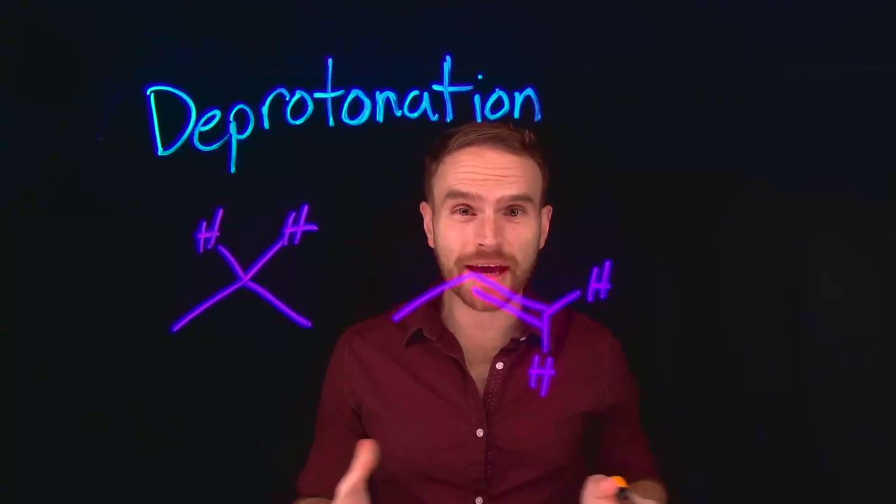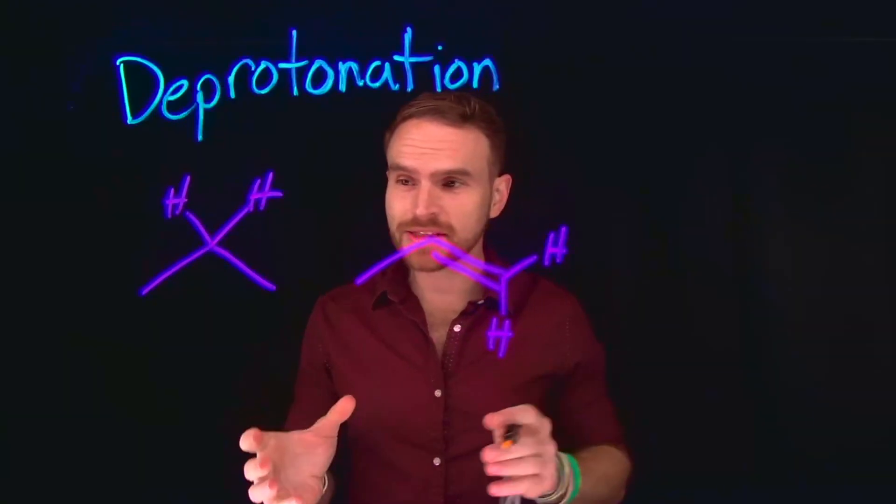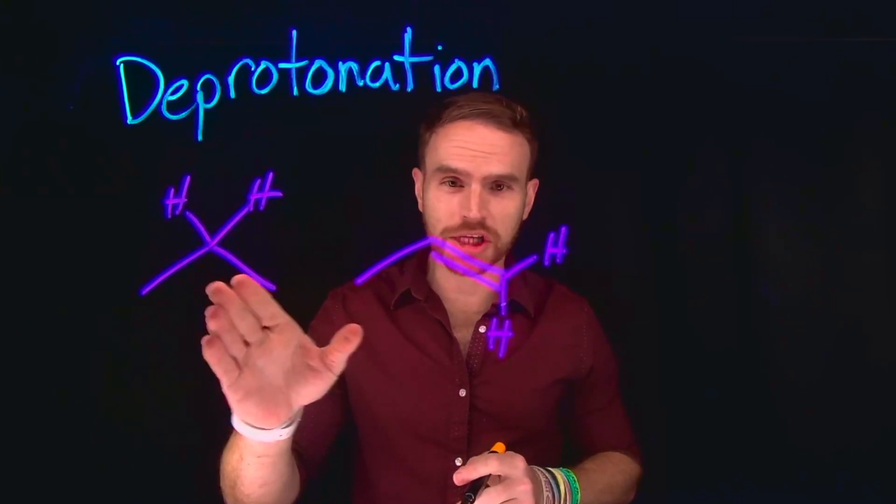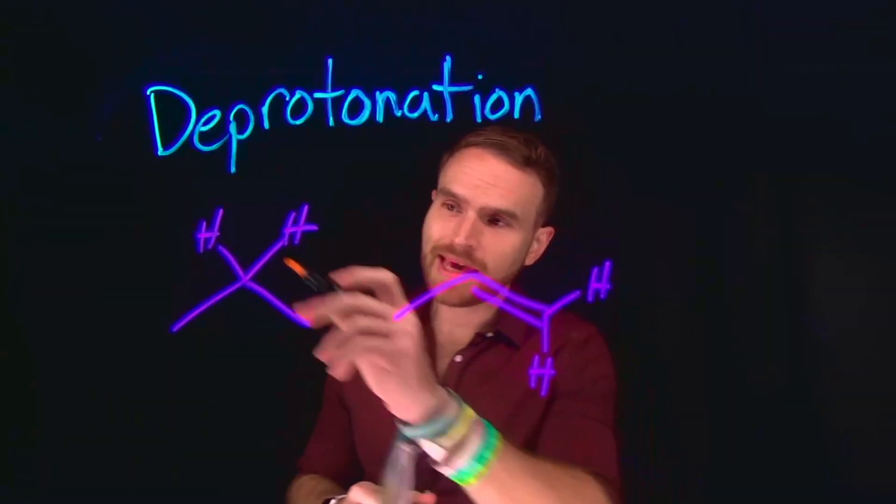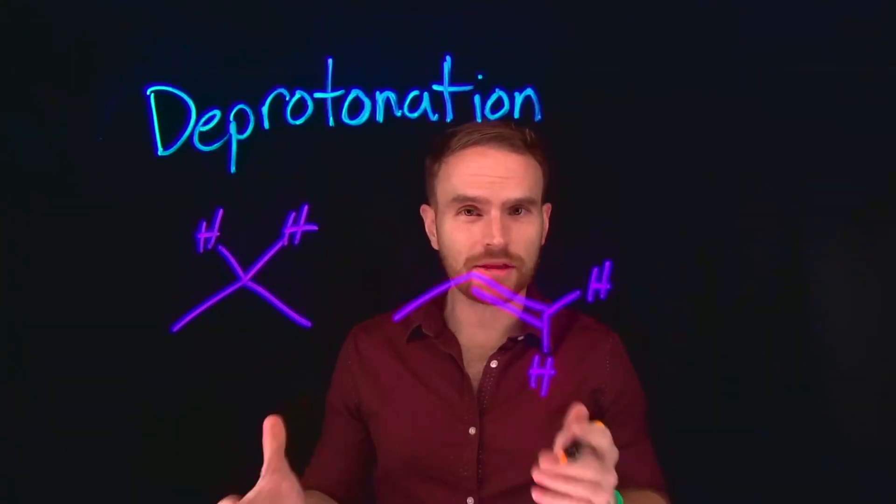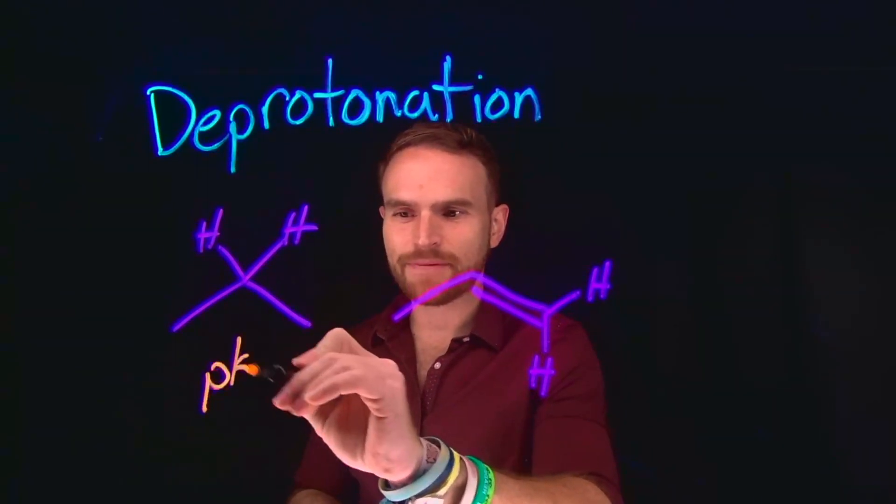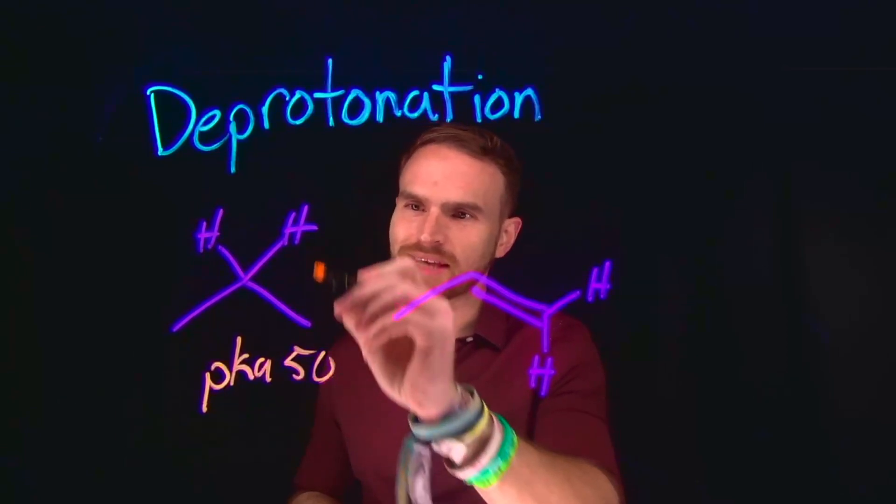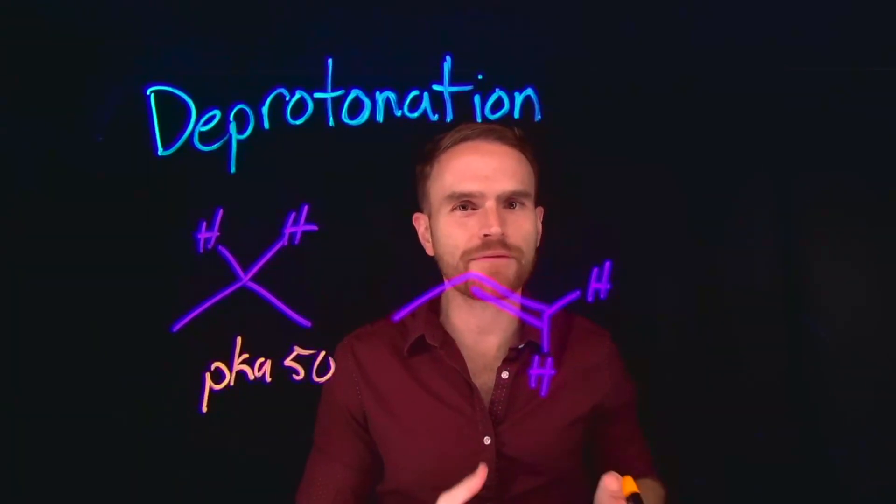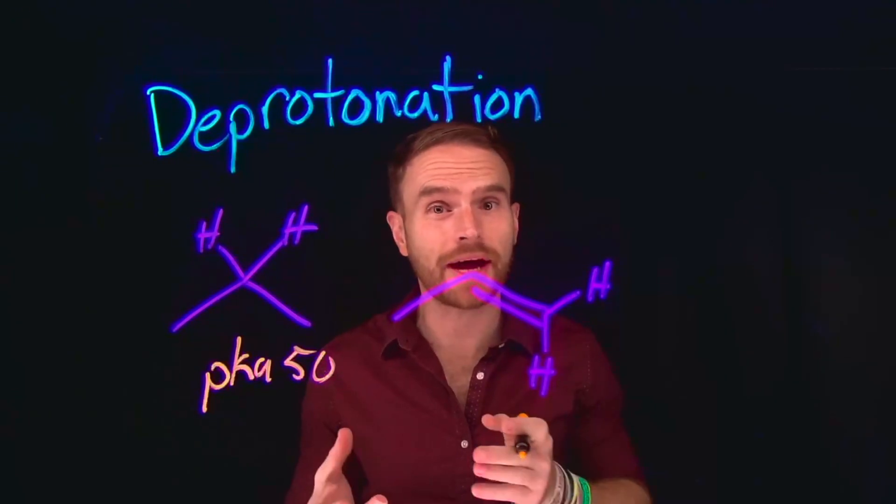The first step in alkyne alkylation is actually the deprotonation step. Let's consider for a moment a regular alkyl chain versus an alkene. The pKa of these hydrogens located at this carbon position is around 50, which means that these hydrogens are not very acidic and therefore not very likely to be deprotonated by a base.